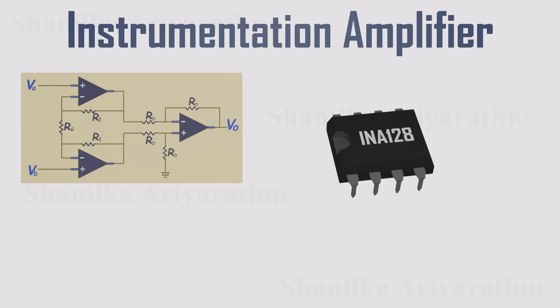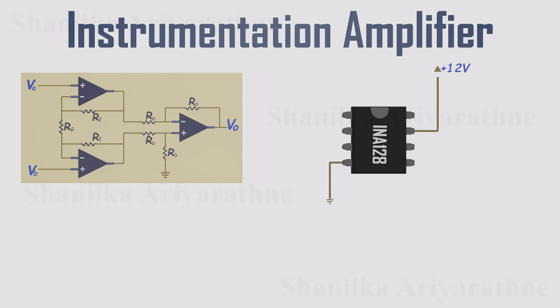For example, consider the popular INA-128 instrumentation amplifier. Pin 4 and pin 7 supply power. Pin 5 is the reference pin, which is usually tied to ground. Pins 2 and 3 are the inverting and non-inverting inputs, while pin 6 is the output.